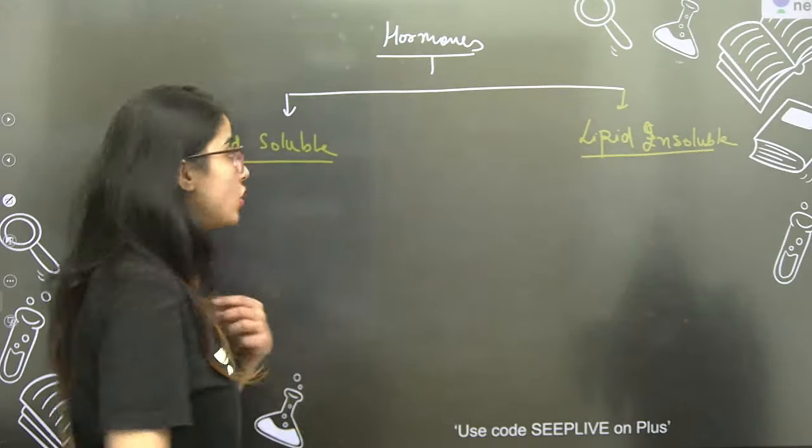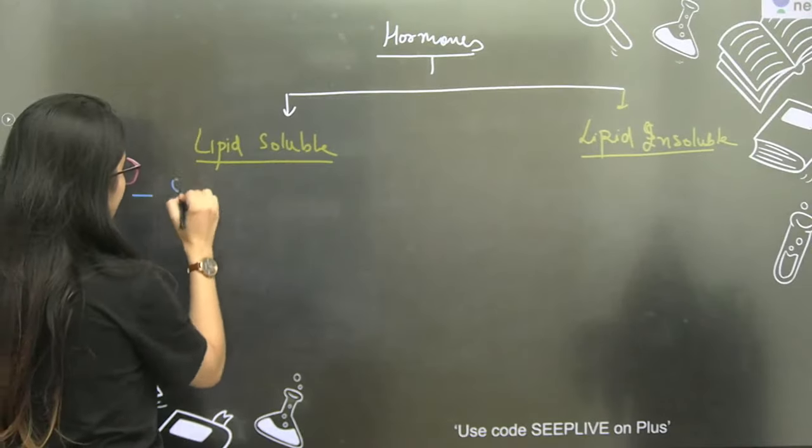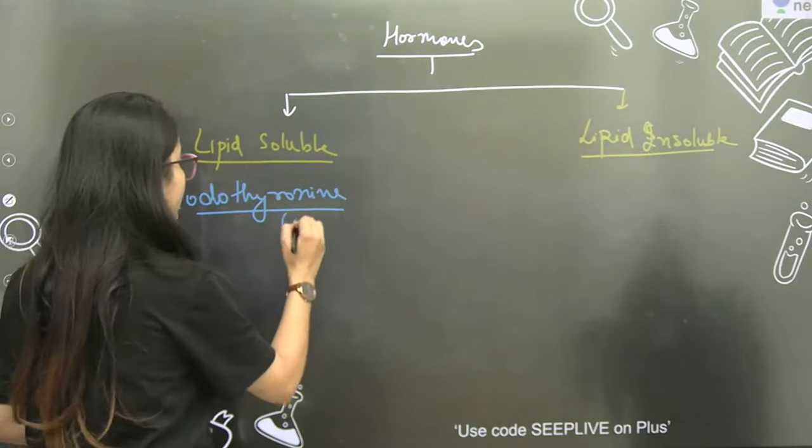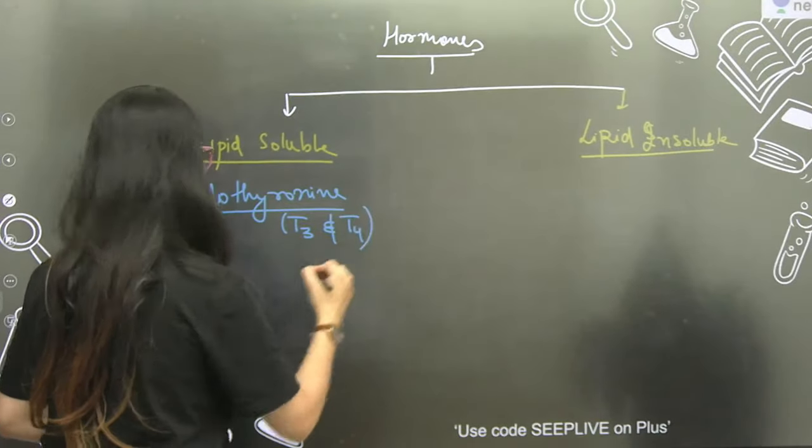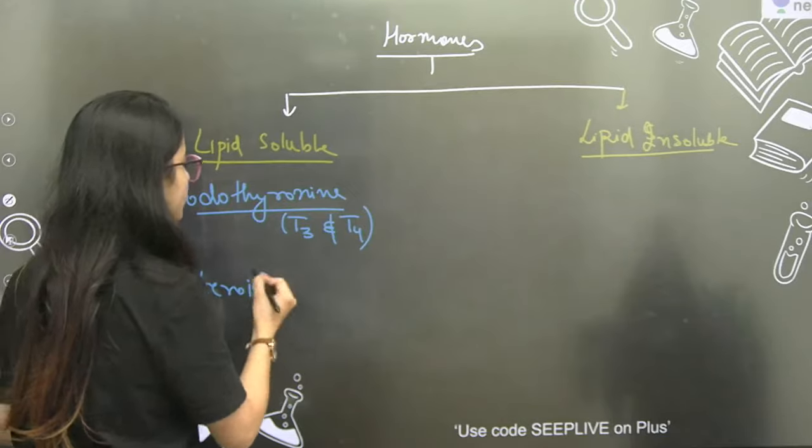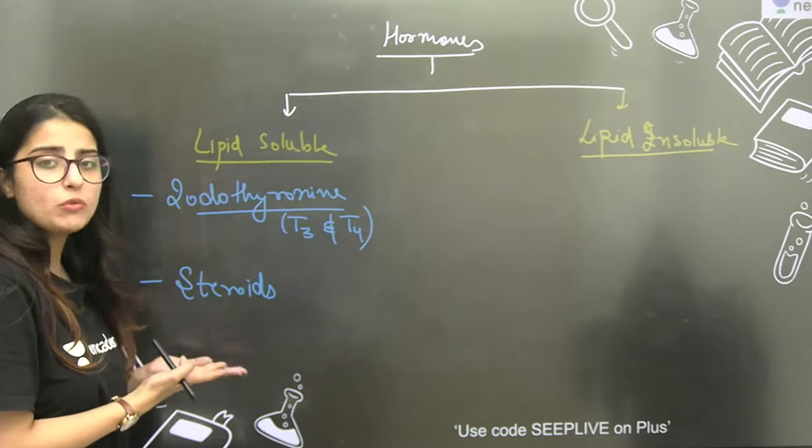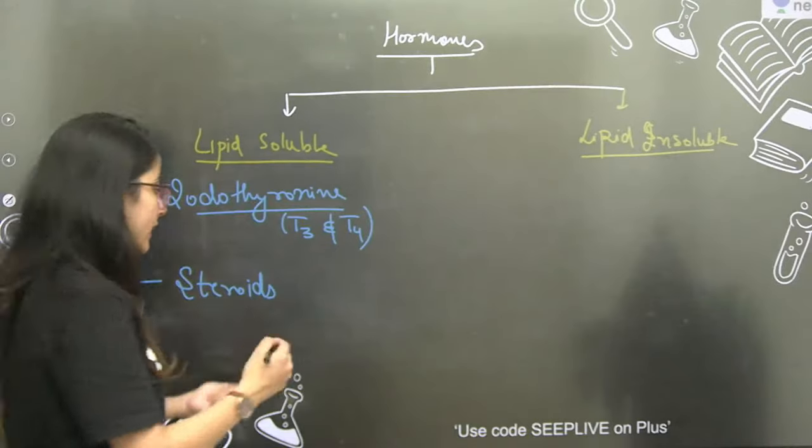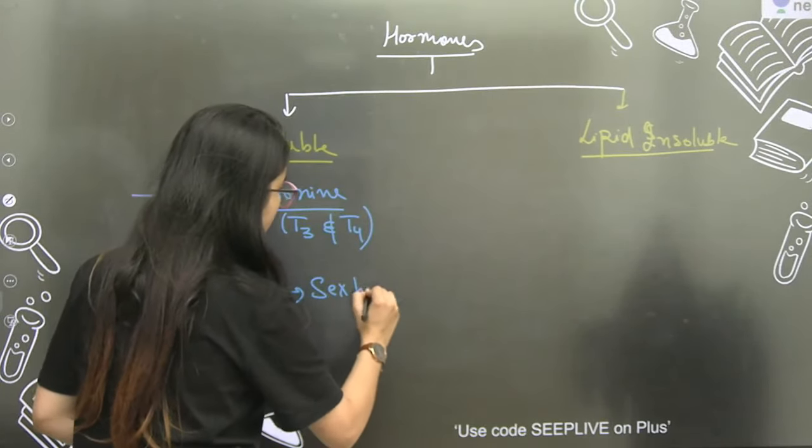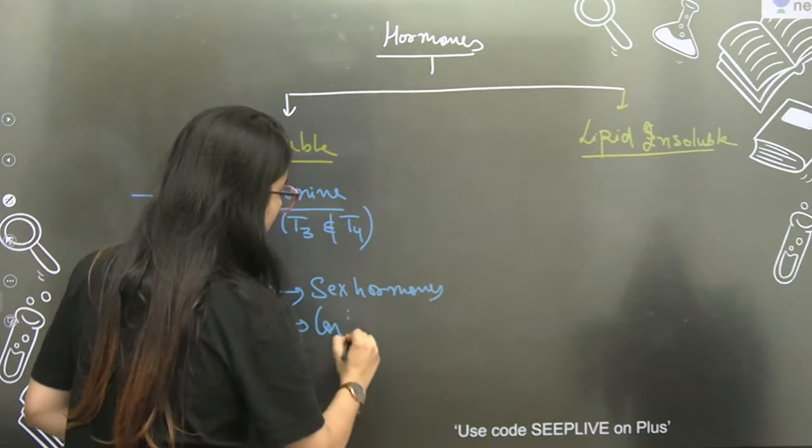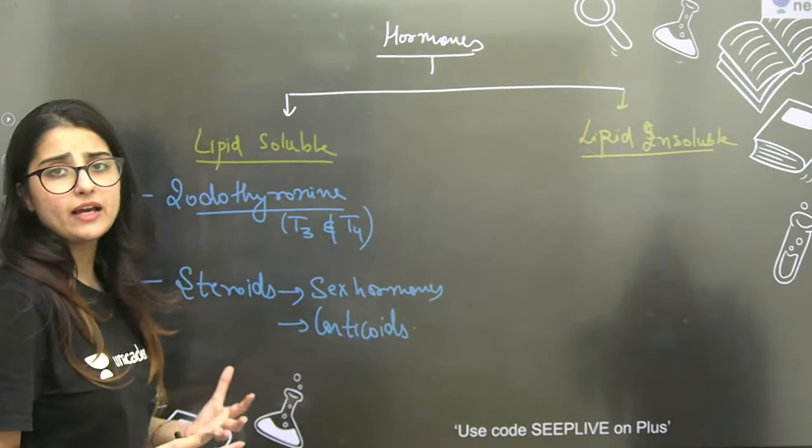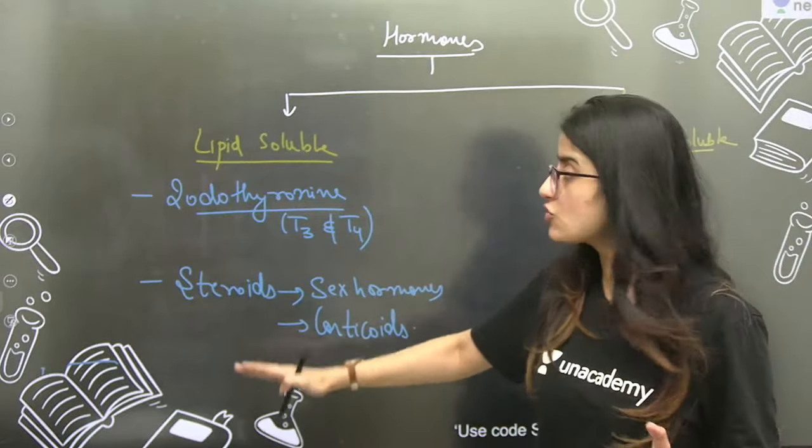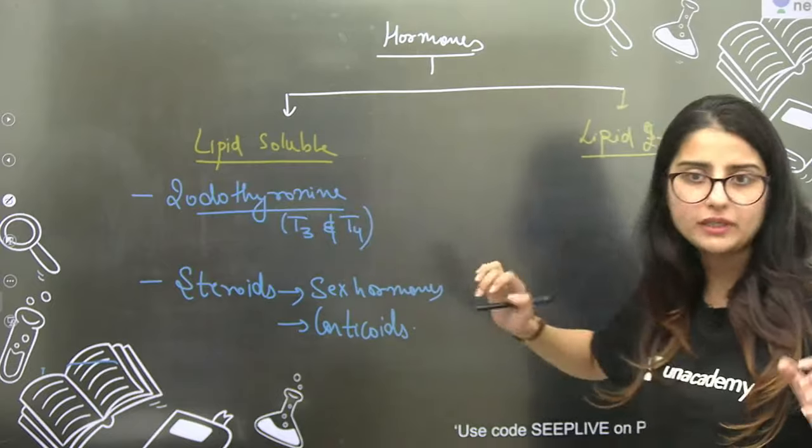Lipid soluble hormones have two categories. One is iodothyronine, that means iodine containing thyroxine - T3 as well as T4. Second are the steroids. Steroids themselves are derived lipids. If you studied biomolecules, steroids are themselves lipids, so they obviously will be lipid soluble. Steroid hormones include your sex hormones, then corticoids like glucocorticoid, mineralocorticoid, sex corticoid. All of them are steroidal hormones derived from cholesterol, and they would be obviously lipid soluble.